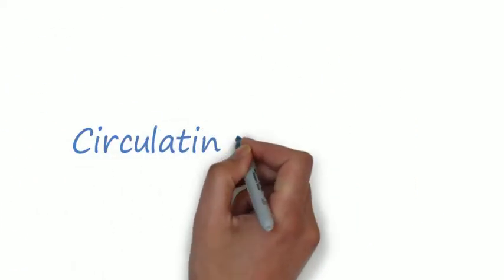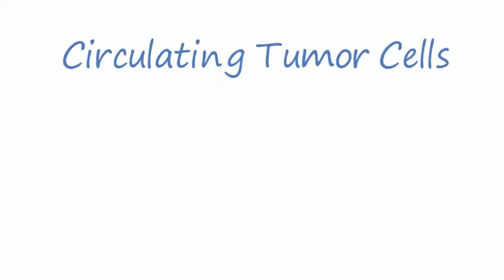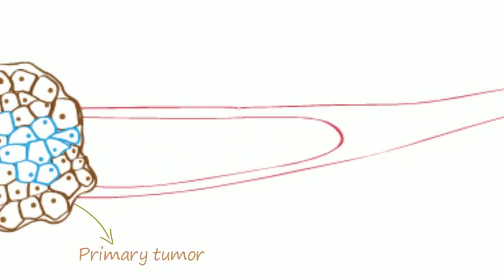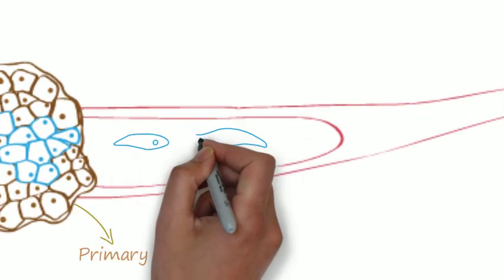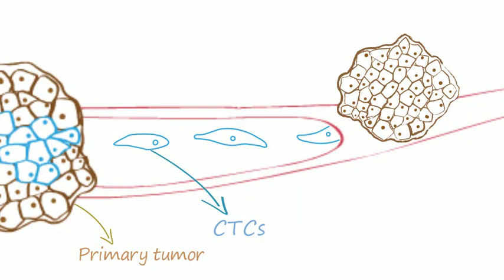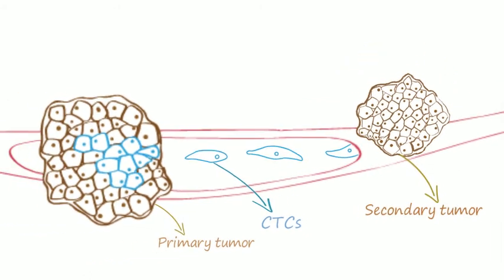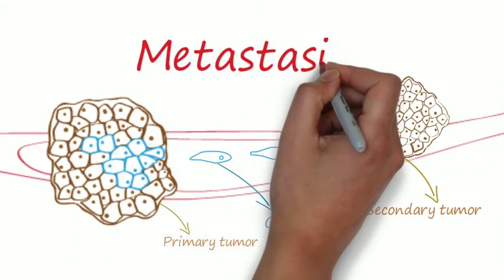What are circulating tumor cells? Circulating tumor cells, or CTCs, are cells that detach from the primary tumor into the bloodstream and travel to other locations of the body, a process known as metastasis.